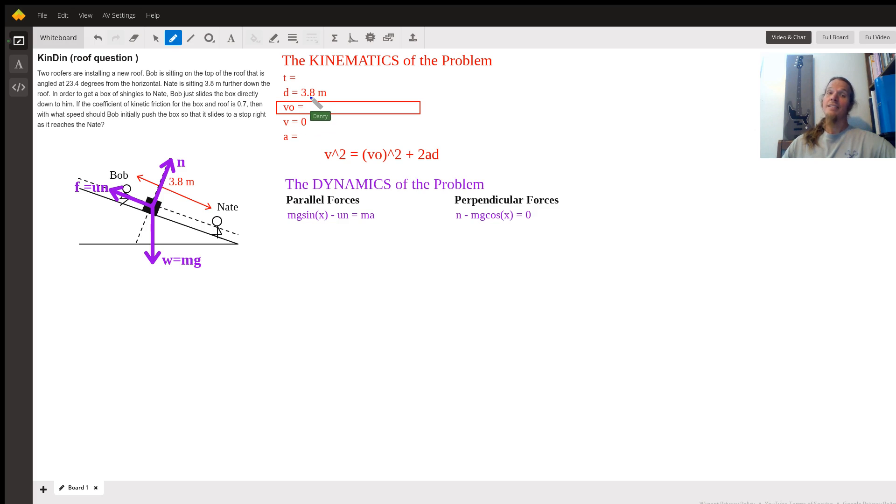I filled in everything else we know from the problem. We know that it's going to slide a distance of 3.8 meters, and that when it slides that distance, it's going to come to rest. That's its final velocity. We don't know the acceleration, and we don't know how long the box is sliding in terms of time, how many seconds it's sliding.